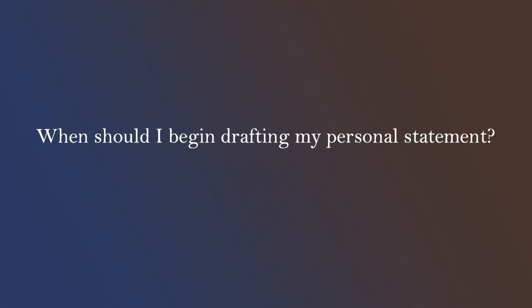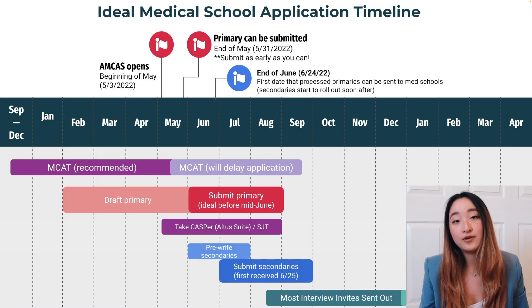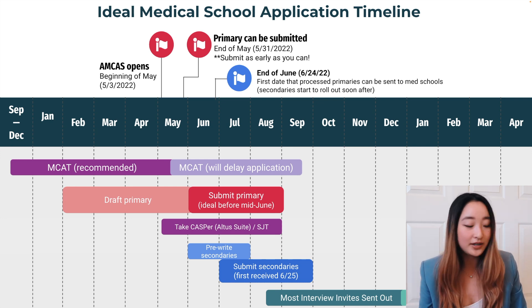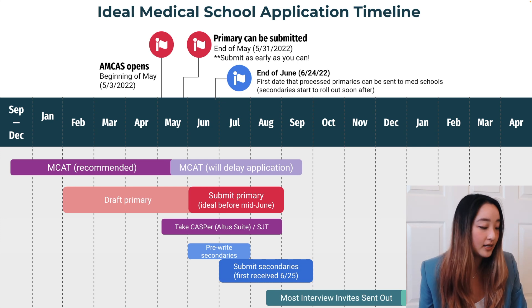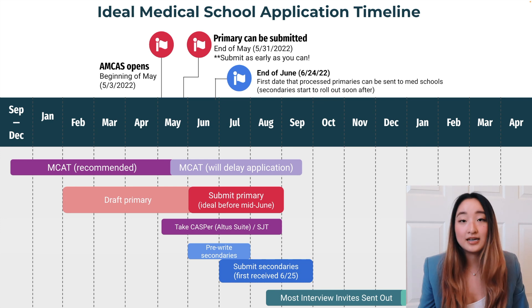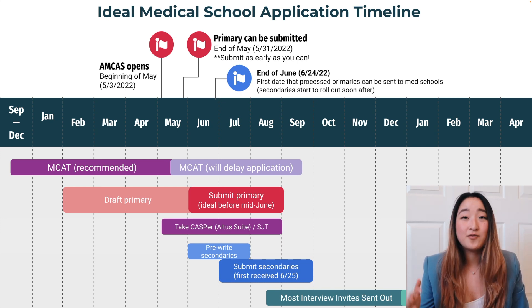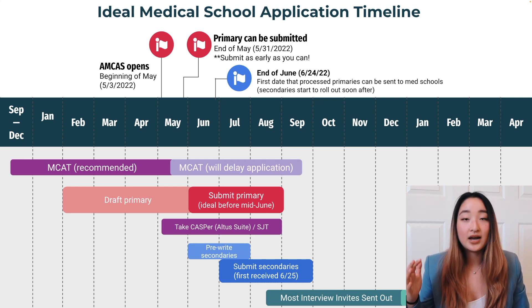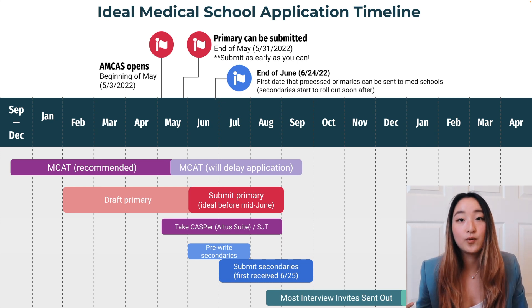At Brown, we have something called the HCAD, which is the preliminary form of our application that we fill out for our health careers office. I began drafting my primary back in around February before the application opened. I would say leading up to May, start thinking and brainstorming about what you want to write about in your personal statement. The vast majority of my actual revising happened in May, so beginning of May, when the application opens, that's when you should really hunker down and ask people for help revising your essay.